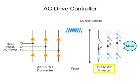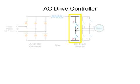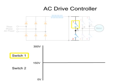In a typical three-phase frequency inverter, there are six switches with a pair of switches for each phase. In each pair of switches, one switch generates the up component of the sine wave and the other generates the down component.